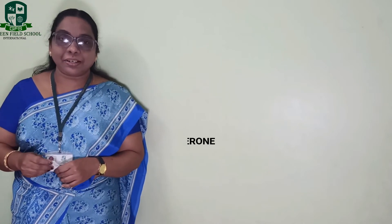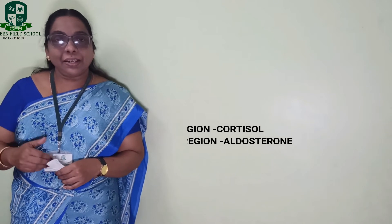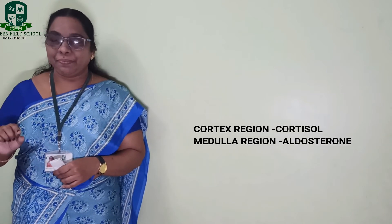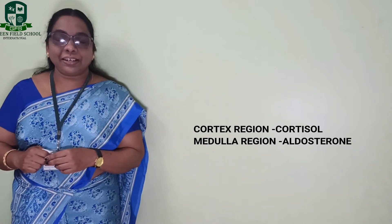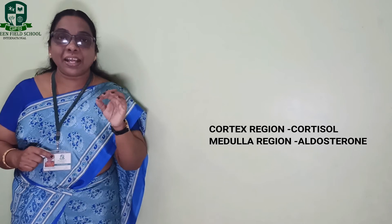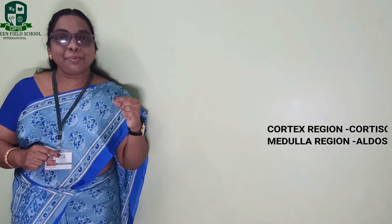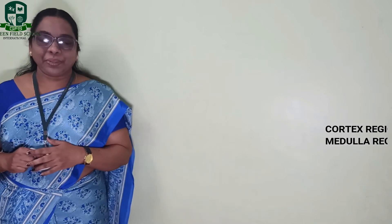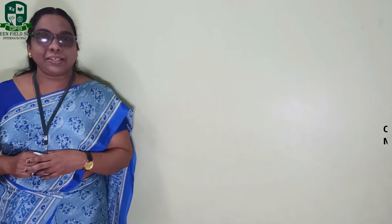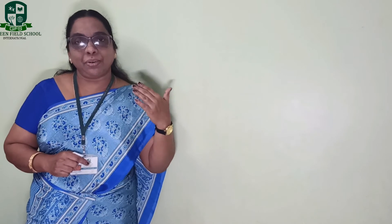If you look at the cross-section of the adrenal gland, two more hormones are also produced. The cortex region produces a hormone called cortisol, and the medullary region produces a hormone called aldosterone. These are the key points — the textbook mentions adrenaline, aldosterone, and cortisol. More detailed study of these hormones will be covered in coming classes.